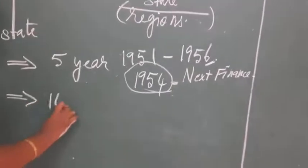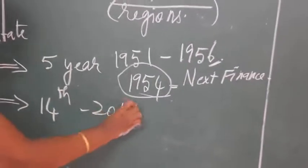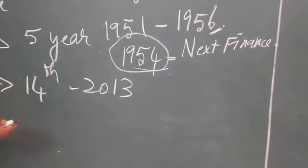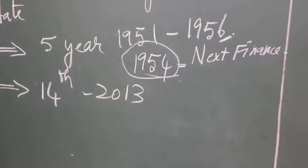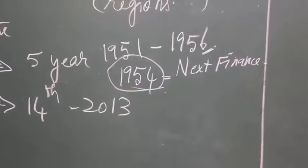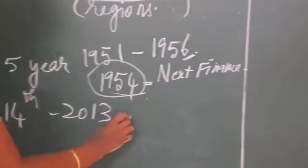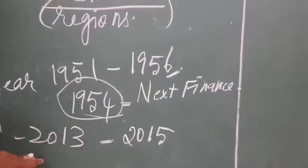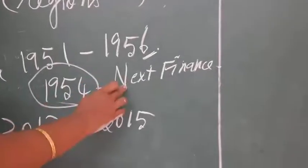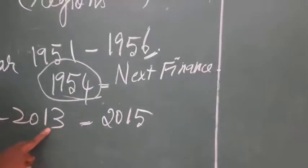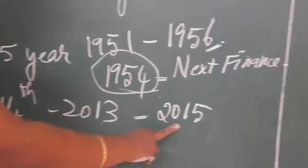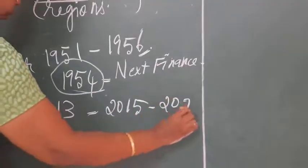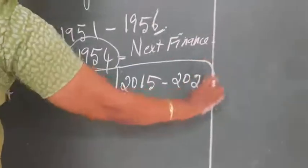The 14th Finance Commission was set up in 2013. Its recommendations were valid from 2015 onwards, as it was set up two years before the functions began. So 2015 to 2020 is the period of the 14th Finance Commission, running from April to March.